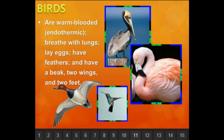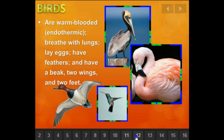Birds are warm-blooded. So far we've talked only about ectothermic animals — those that are cold-blooded and get their heat from outside. Ecto means outside, therm means heat. But now we're talking about birds, which are endothermic. Endo means inside, so inside heat means warm-blooded. Birds breathe with lungs, lay eggs, have feathers, and have a beak with two wings and two feet.